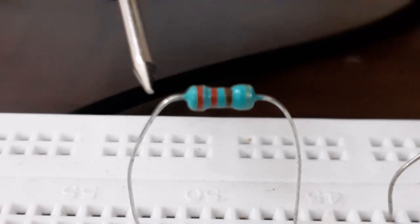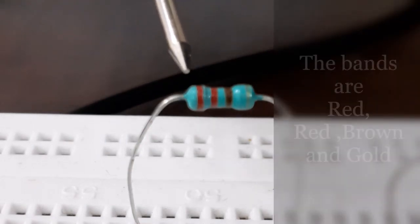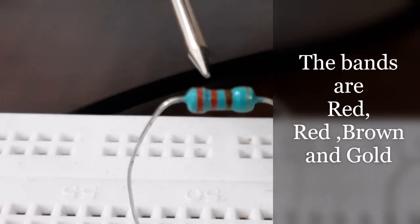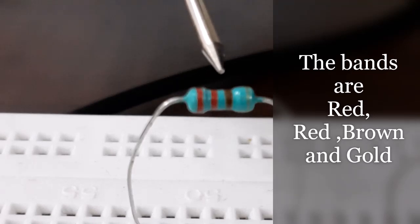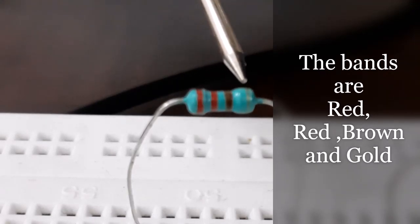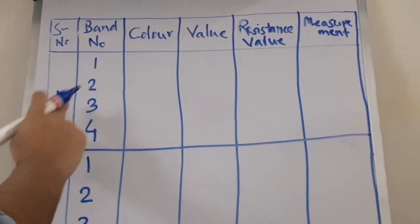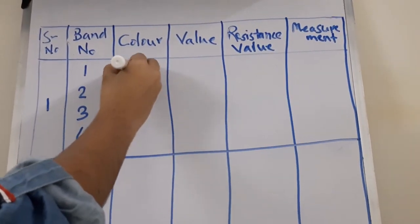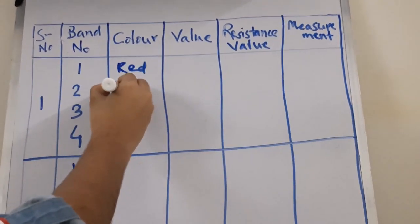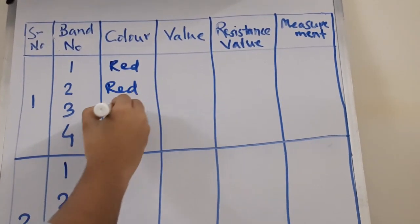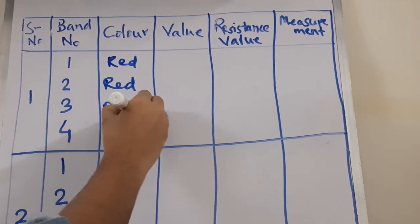Remember that you have to start from the left. So the first band is red, the second one is also red, the third one is brown, and the fourth one is gold. So for the first resistor, I will write the colors: red, red, brown, and gold.